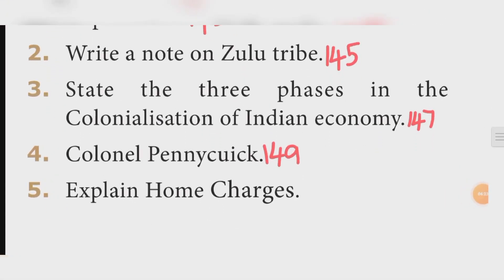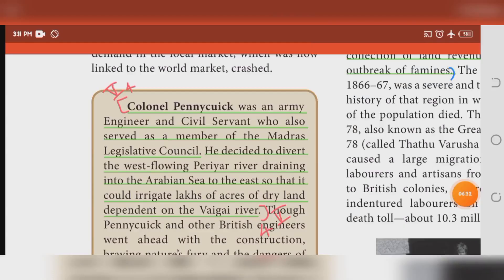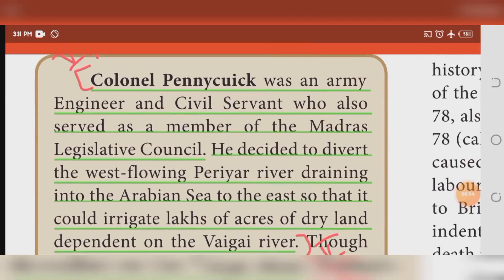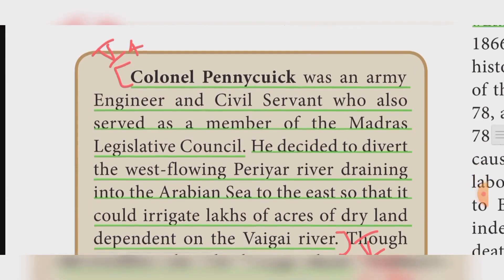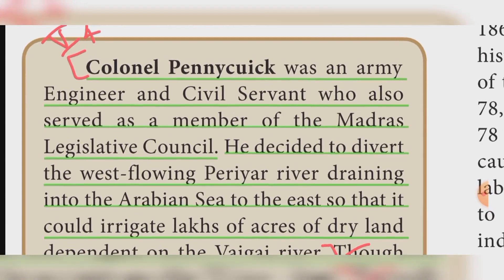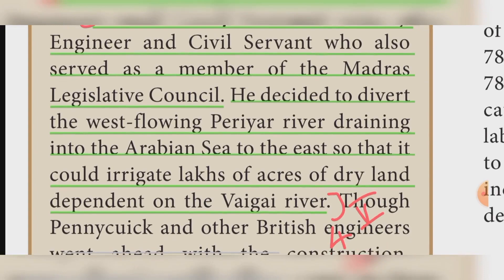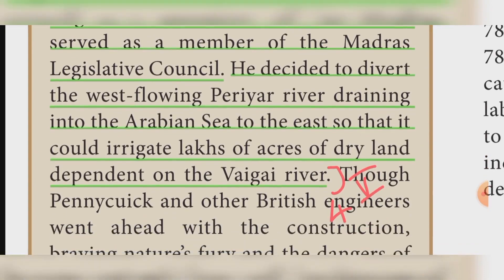Question four: Who was Colonel Pennycuick? Answer on book page 149. Colonel Pennycuick was an army engineer and civil servant who also served as a member of the Madras Legislative Council. He decided to divert the west-flowing Periyar River draining into the Arabian Sea to the east so that it could irrigate lakhs of acres of dry land depending on the Vaigai River.